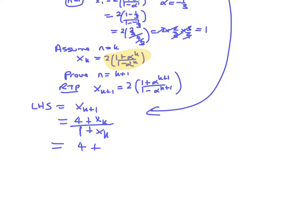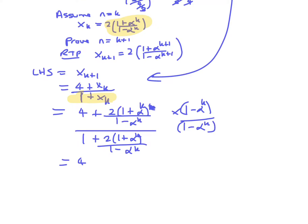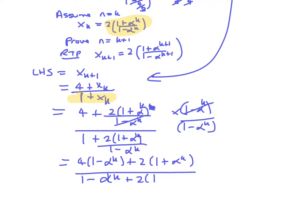So it's (4 plus x_k), where x_k is 2 times (1 plus alpha to the k) over (1 minus alpha to the k). I'll split it with its denominator to make it easier. And it's 1 plus 2 times (1 plus alpha to the k) over (1 minus alpha to the k) on the denominator. If I multiply top and bottom by (1 minus alpha to the k), I get 4 times (1 minus alpha to the k) plus 2 times (1 plus alpha to the k) on top, and 1 minus alpha to the k plus 2 times (1 plus alpha to the k) on the bottom.